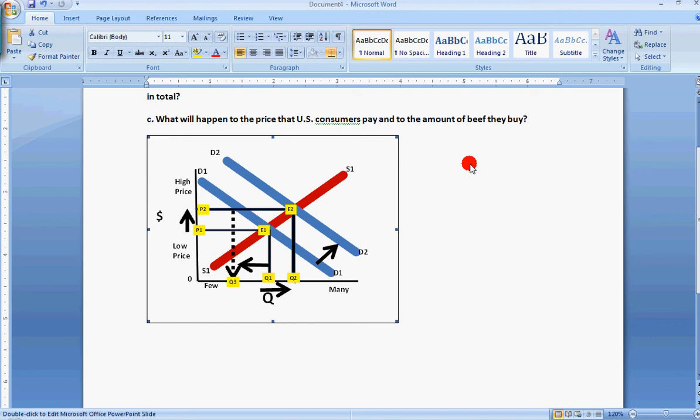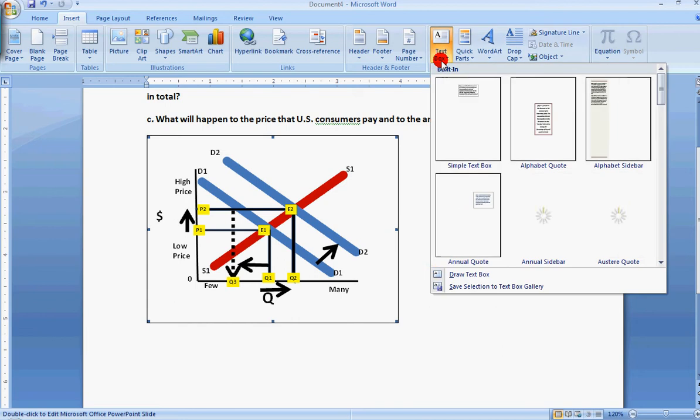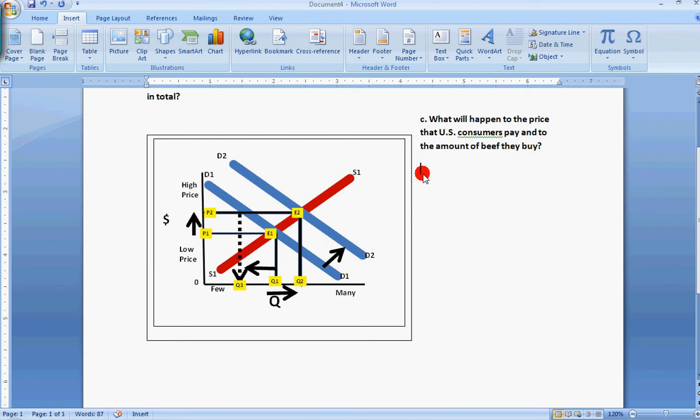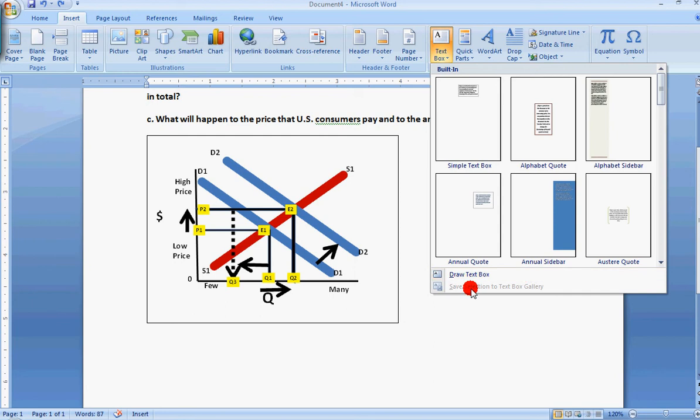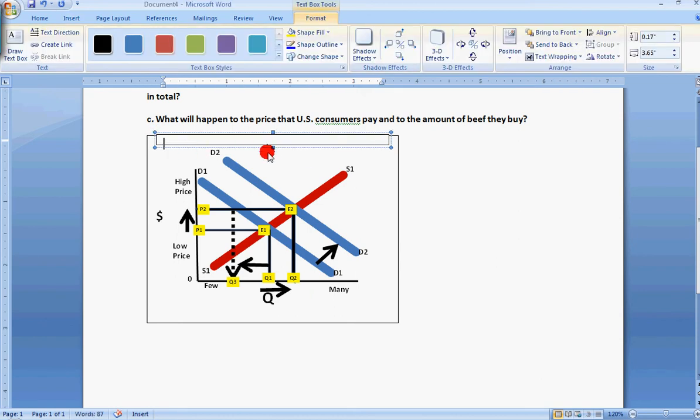And you can even label it by coming up to insert and getting text box and coming down to draw text box. And then, let's get rid of this. And we can draw a text box in. Well, I lost it. Let's do this a minute. I had it highlighted and that was the problem. So insert text box, draw a text box. And what I'm going to do is draw a text box right here. And I can put the label in.